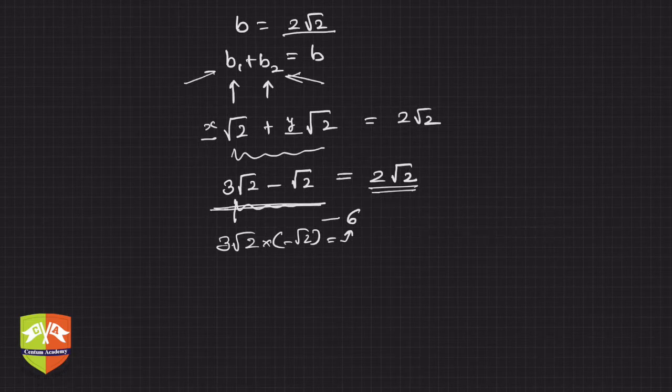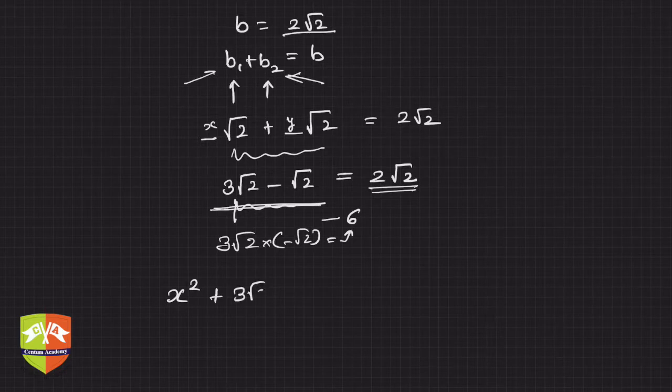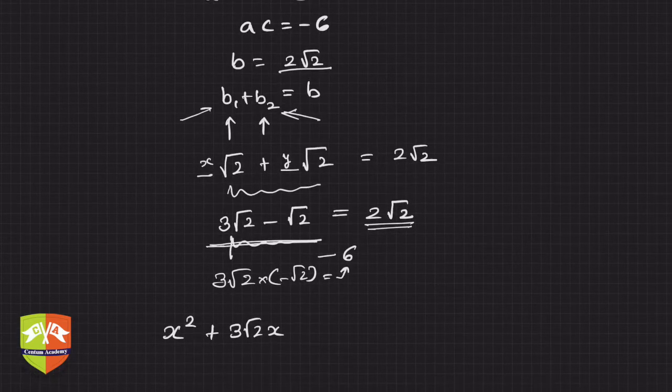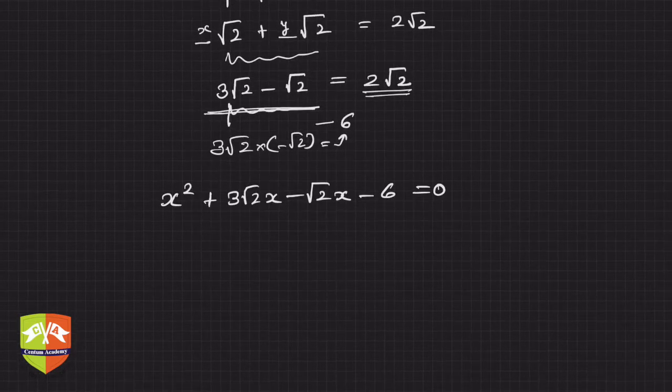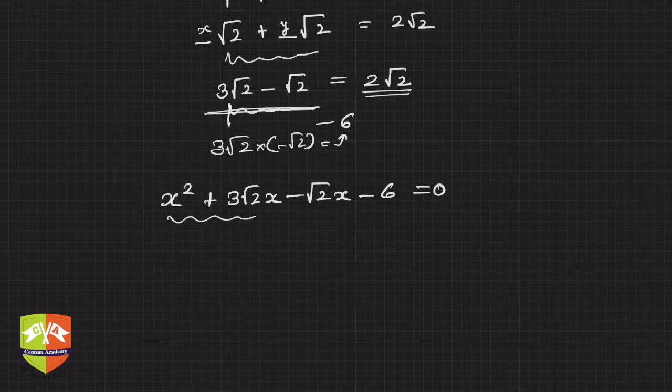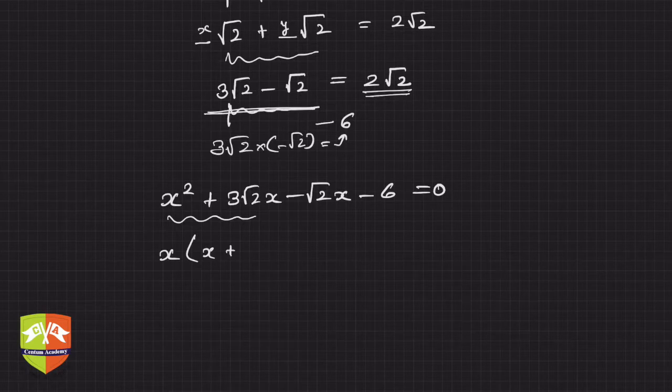So now coming back to the equation, it is x² + 3√2x and -√2x and then -6 equals 0. Now if you see, what are the common factors here? x, that's it. So hence it will be x + 3√2.